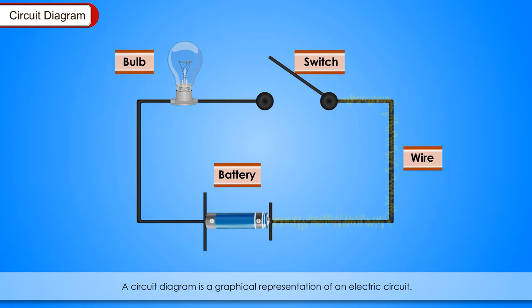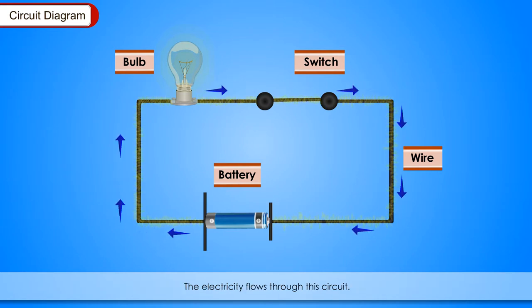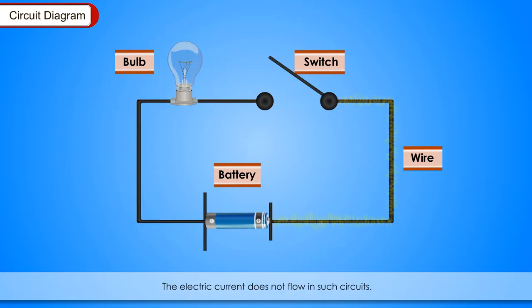Circuit diagram: A circuit diagram is a graphical representation of an electric circuit. In an electric circuit, when the switch is turned on, the electric circuit is complete or closed. The electricity flows through the circuit. When the switch is off, the electric circuit is an open circuit and is not complete. The electric current does not flow in such circuits.